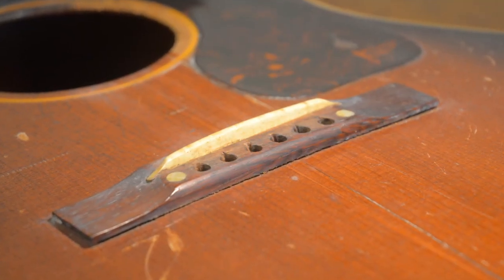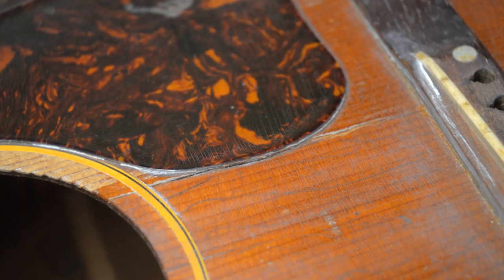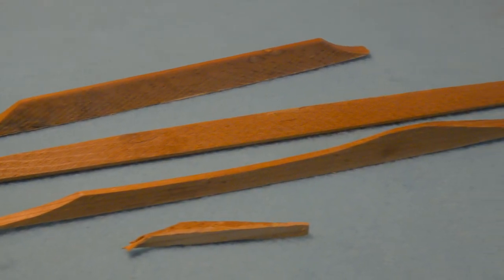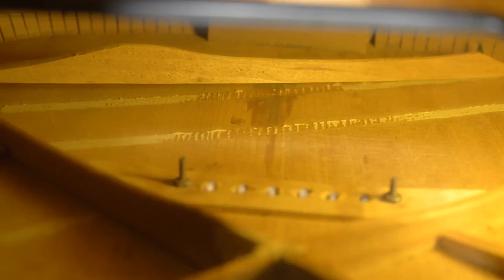The bridge looks very loose. There's a pickguard crack to deal with, but the main issue is that all the braces are either loose, missing, or detached. I'm going to fix these by going through the sound hole and not taking the back off, which always leaves some kind of scar.